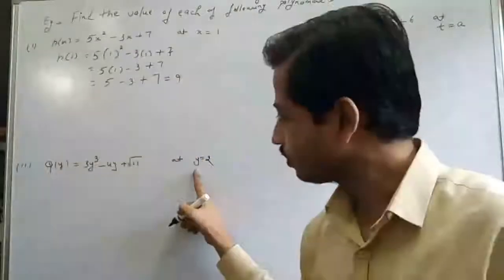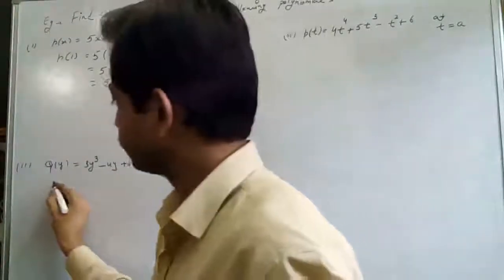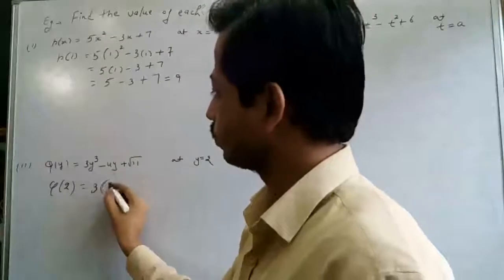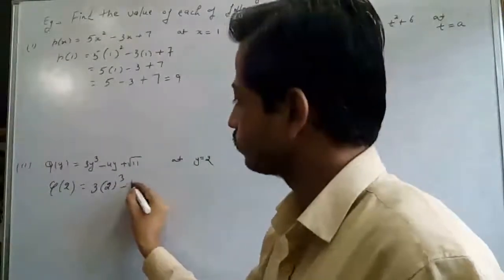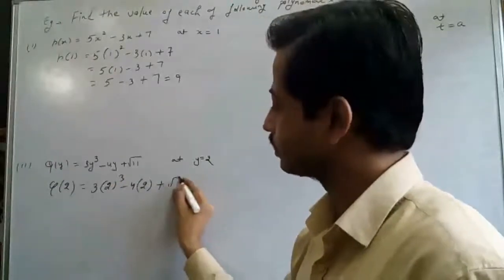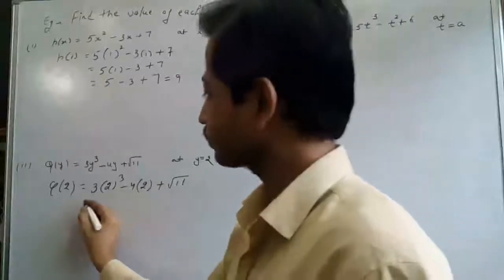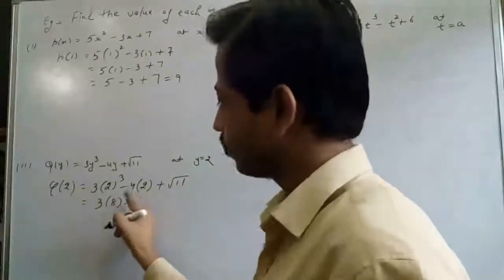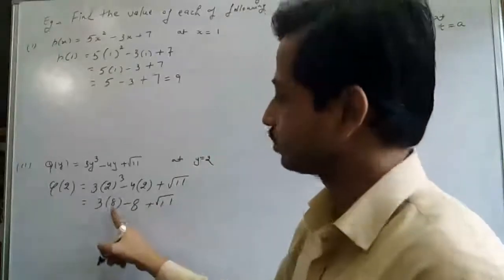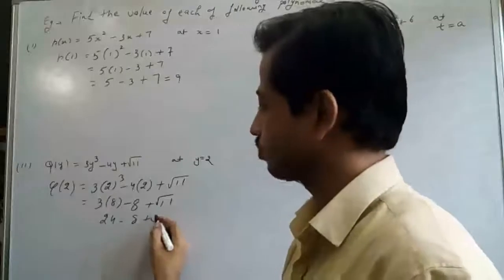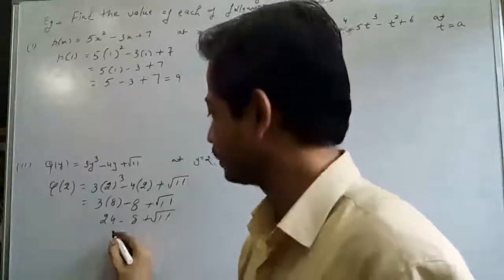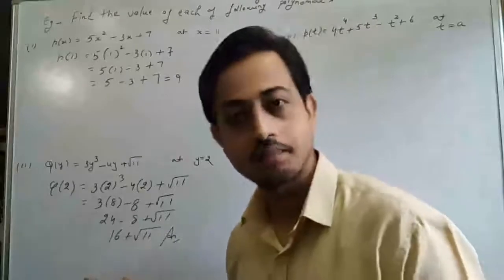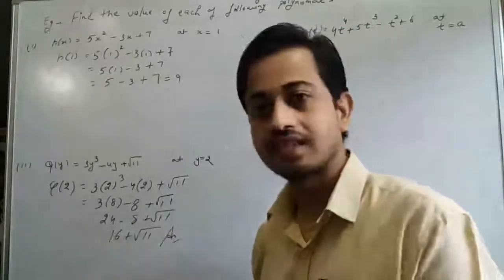For the second part, we have to calculate the polynomial Q at y=2. Put y=2: 3 into 2 cube minus 4 into 2 plus root 11. Now, 2 cube is 8, so 3 into 8 is 24. Minus 4 into 2 is 8, so 24 minus 8 is 16. Plus square root of 11. Since this is a square root term and 16 is a simple term, they cannot be added. So the final answer is 16 plus square root of 11.